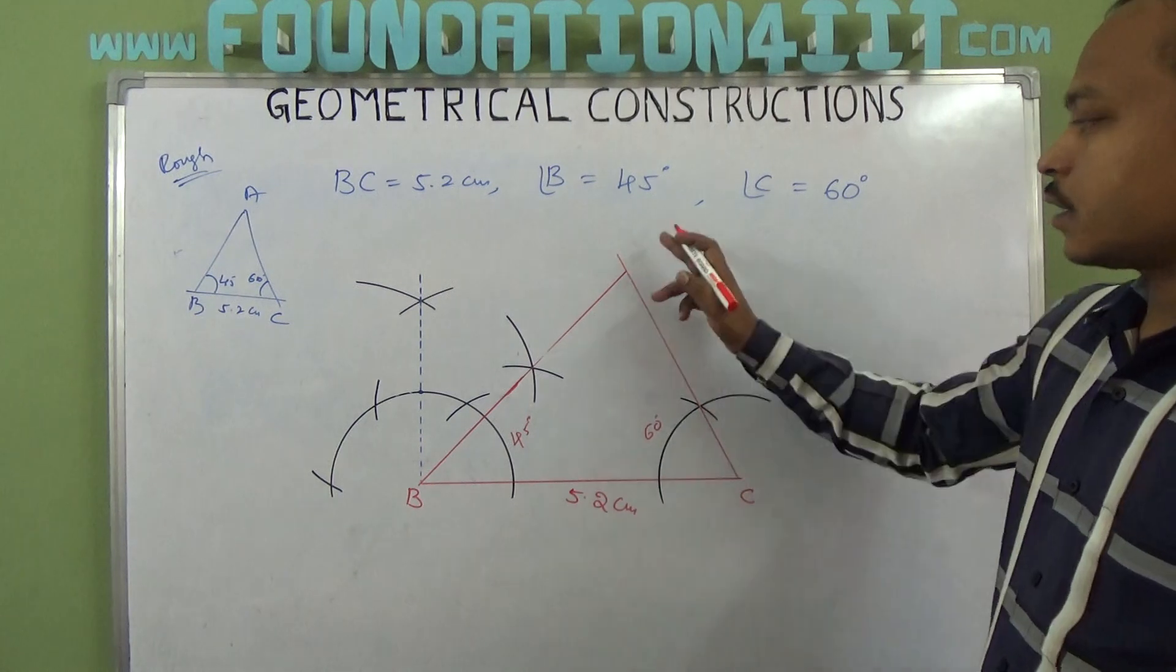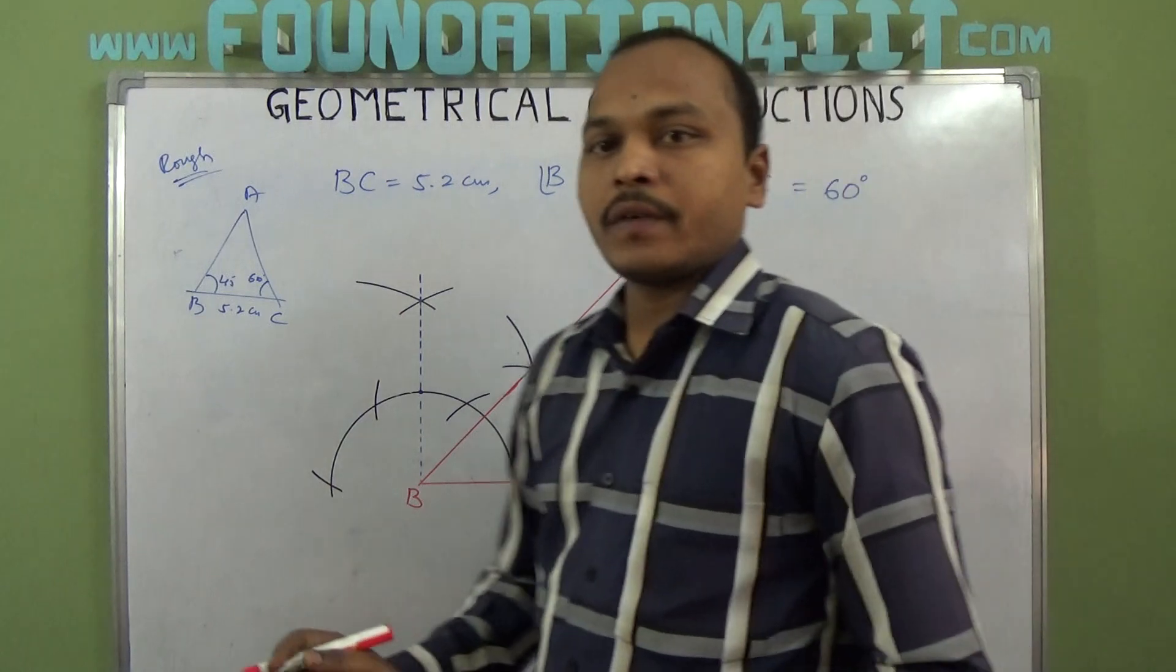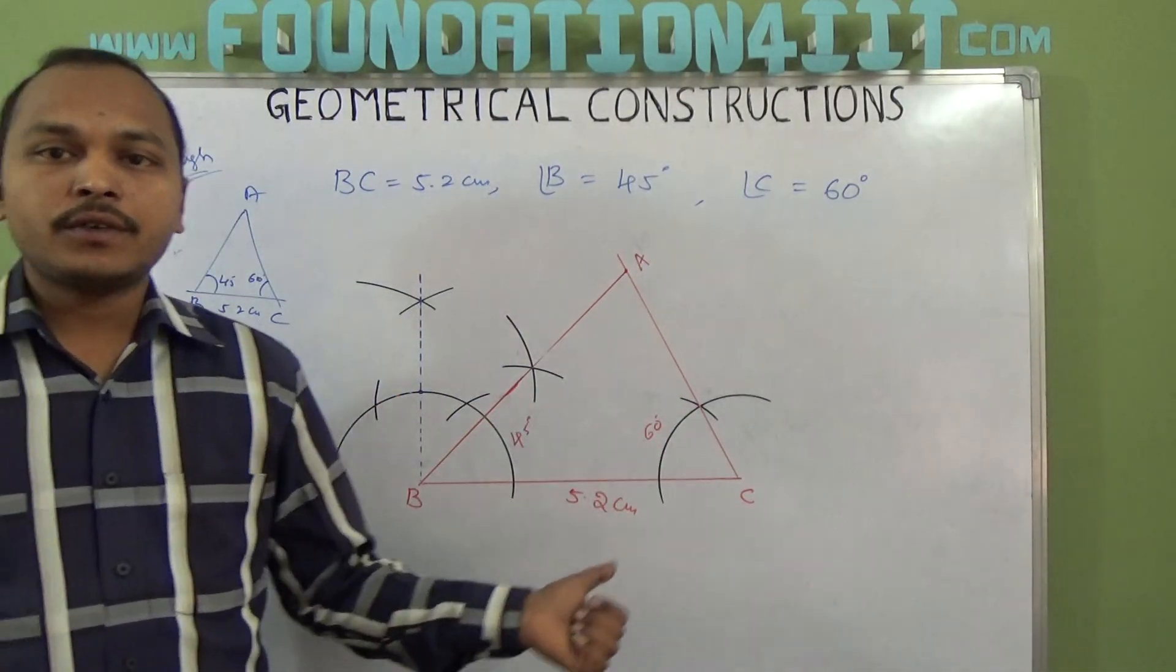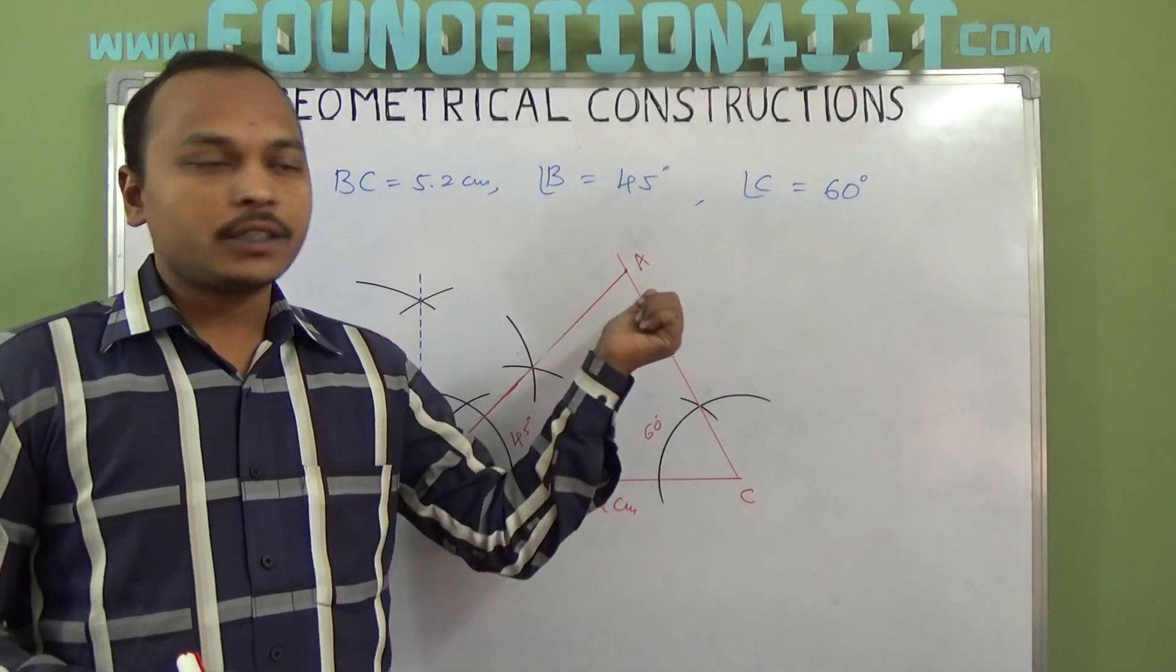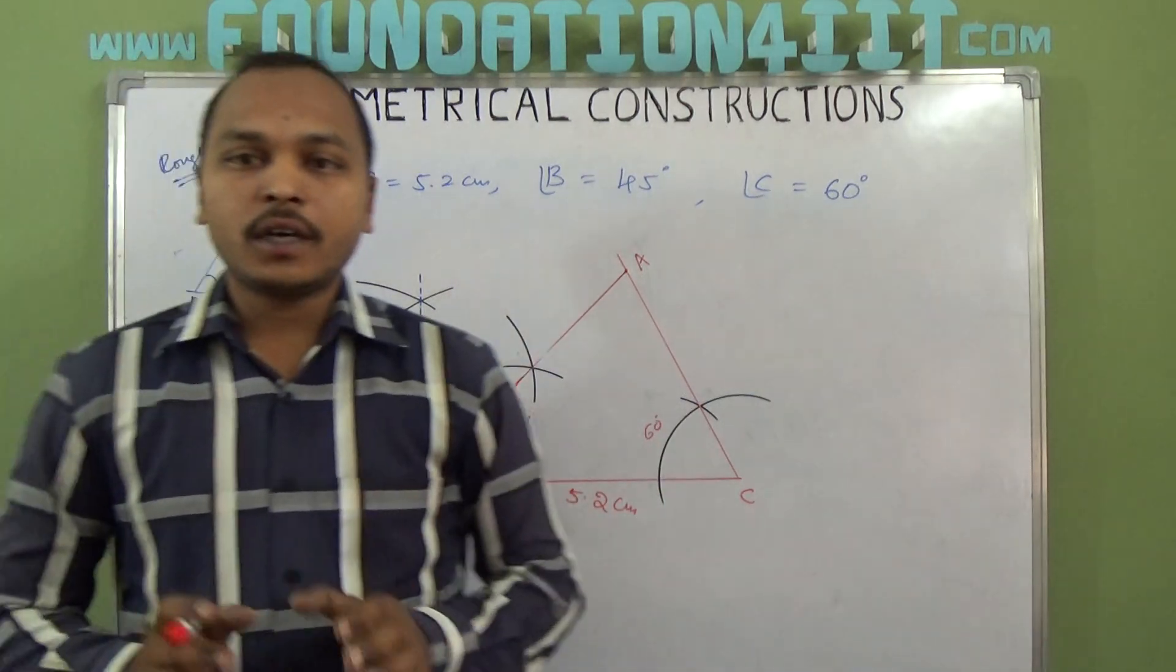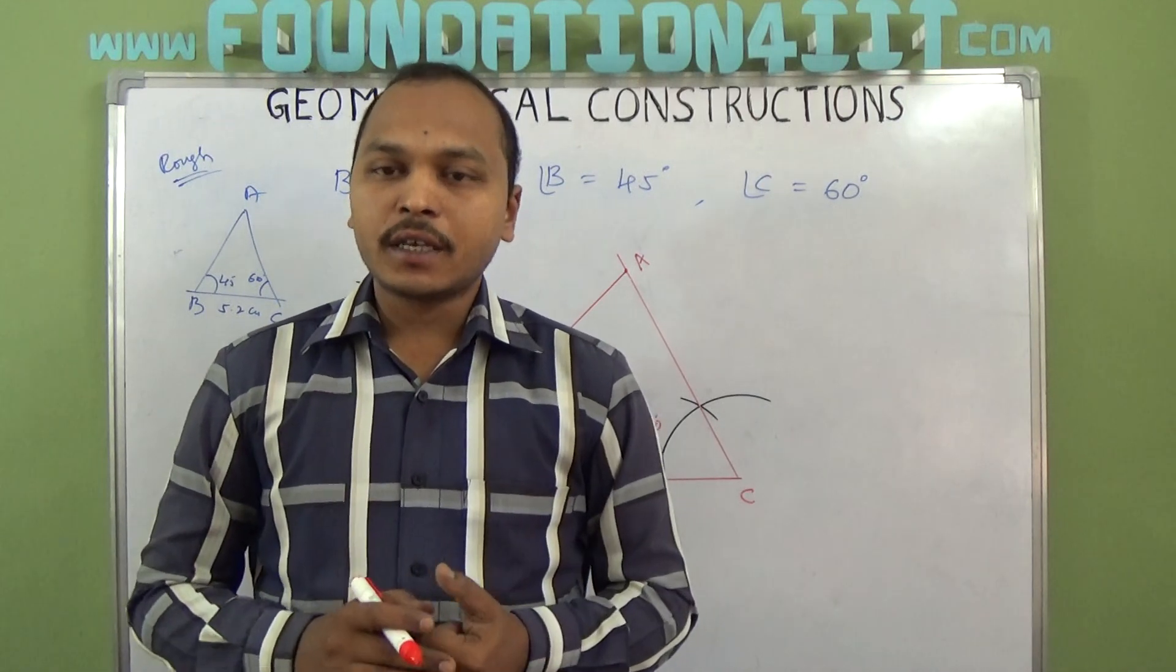Now the 45 degree and 60 degree lines, where they intersect is vertex A. This is the method: first construct the line segment, then draw the two angles. Extend these two lines until they meet at point A. ABC is the required triangle constructed with one side and two included angles given.